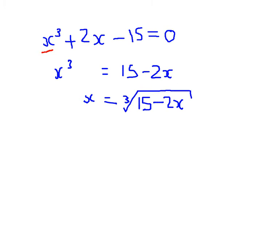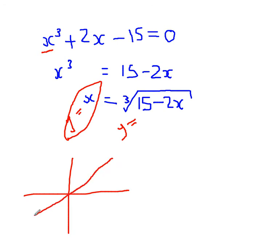But what we can do is we can draw two graphs, one of y = x and one of y = ∛(15 - 2x), which I don't quite know what it looks like, but it's the principle that counts here. If we drew a graph of y = x, we know that would look like this. It's a straight line.